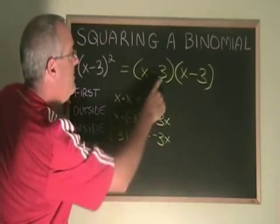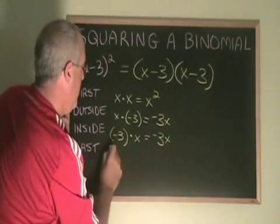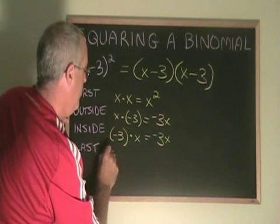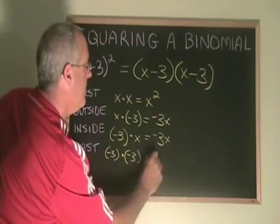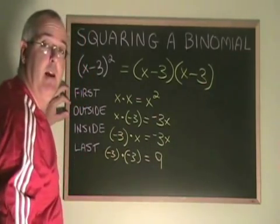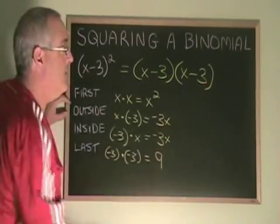The last terms are the negative 3 and the negative 3. Negative 3 times negative 3 equals positive 9.